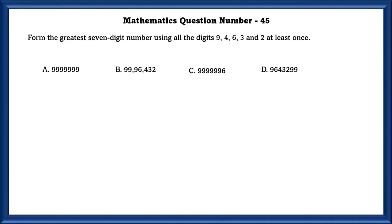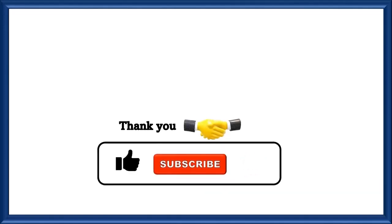Mathematics question number 45. Form the greatest seven-digit number using all the digits 9, 4, 6, 3, and 2 at least once. The answer is B. That's it for this video. Make sure to subscribe, hit that like button, and turn on post notifications so that you guys never miss out on a video that I upload, and I'll see you all next time. Goodbye.